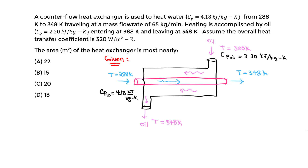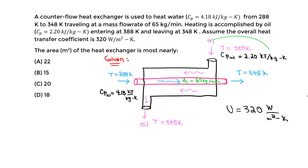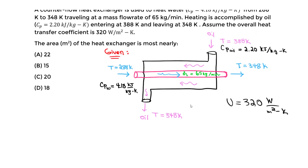U is 320 watts per meter squared Kelvin. The mass flow rate of water, M dot, is 65 kg per minute — that's specifically for water. We do not know the mass flow rate for oil, but we will determine that as we proceed. First, let's find the area.